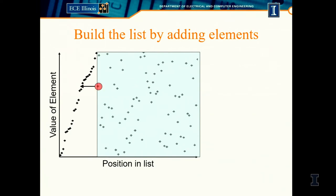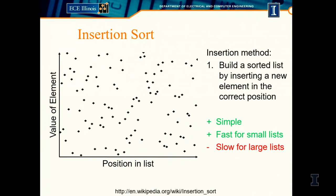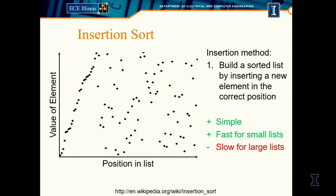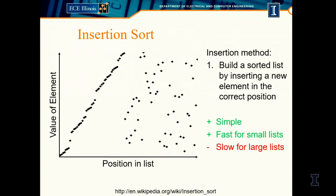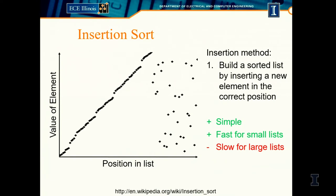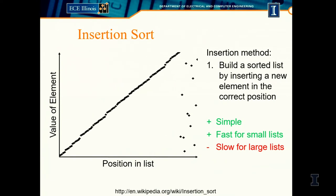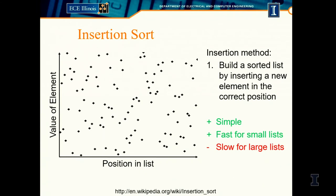We want to insert a new element at the correct position in the list. To insert the object there, we need to move all the objects over by one and insert it in. The animation goes horizontally — we keep picking up new elements and inserting them. This part of the list is sorted, this part is unsorted. It's like a sweeper: you sweep up and insert where they go.